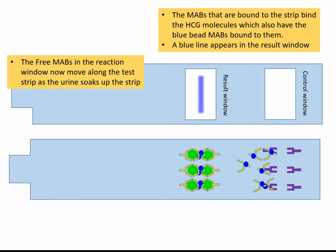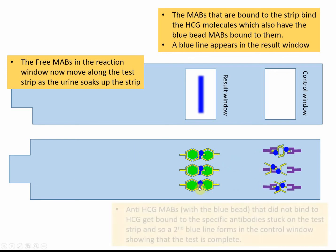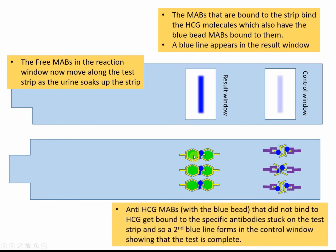Some of the monoclonal antibodies here will bind to the immobilised ones, because they are now carrying HCG. So the immobilised antibodies on the strip bind to HCG molecules which also have the blue bead attached, giving us a blue line in the results window. The unbound ones carry on all the way through and bind in the control window, giving us the two blue lines. The anti-monoclonal antibodies in the control window bind the free antibodies that did not bind to any HCG, producing a second blue line.